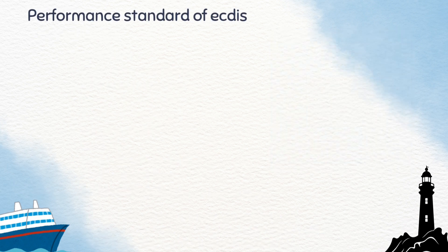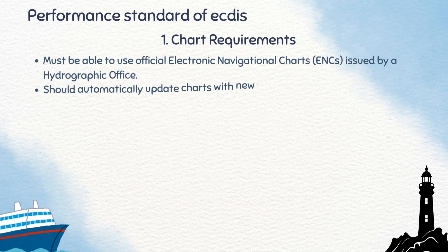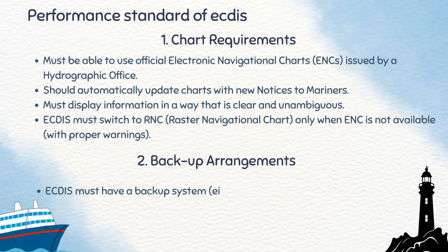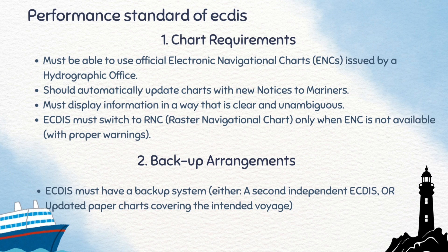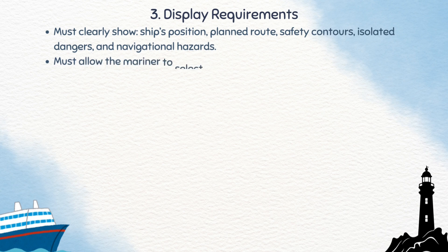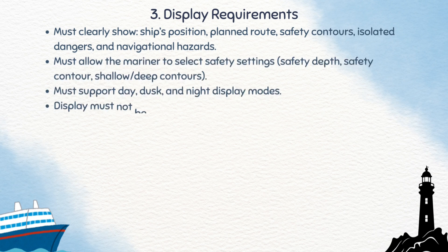Now our next topic is performance standards of EGDIS. According to IMO requirements, EGDIS must meet certain performance standards. First is chart requirement: it must use official ENCs issued by Hydrographic Offices, should update automatically with notices to mariners, must be clear and unambiguous, and should switch to RNC only if ENC is not available with a proper warning. Second is backup arrangements: it must have either a second EGDIS or updated paper charts covering the voyage. Third is display requirement: it must show the ship's position, route, safety contour, and dangers and hazards.